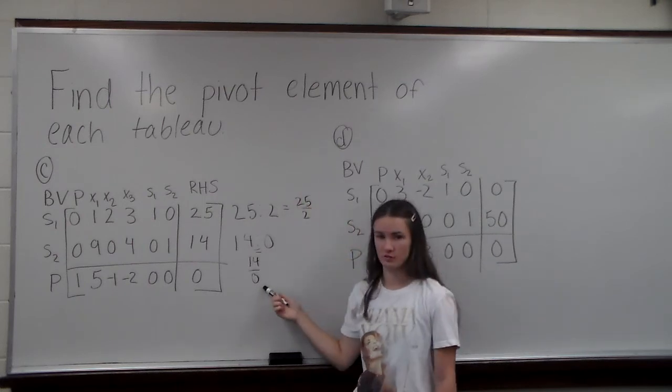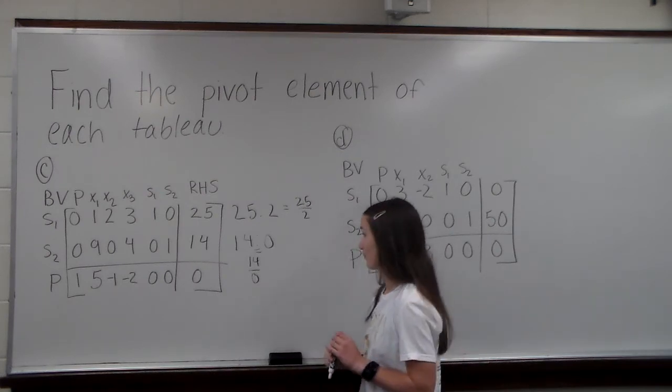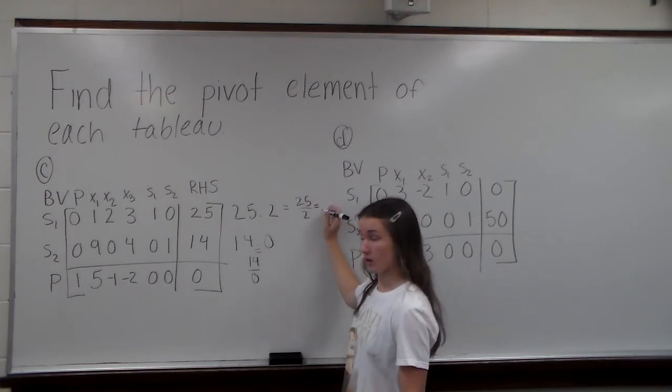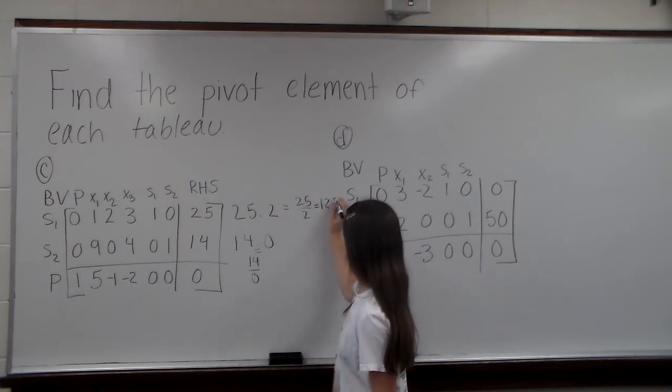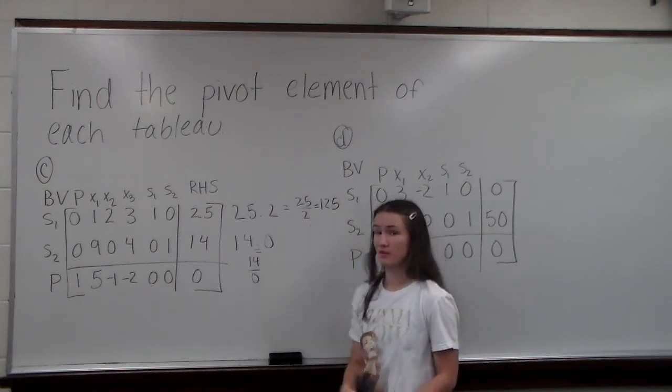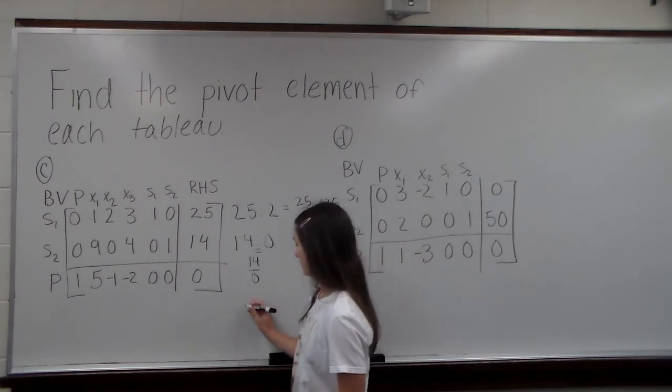But as we can see, 14 over 0 would give us an undefined value. So we can't have that, and 25 over 2 gives us 12 and a half. So in this case, our 2 would be the pivot element since that's undefined. So 2 is our pivot element.